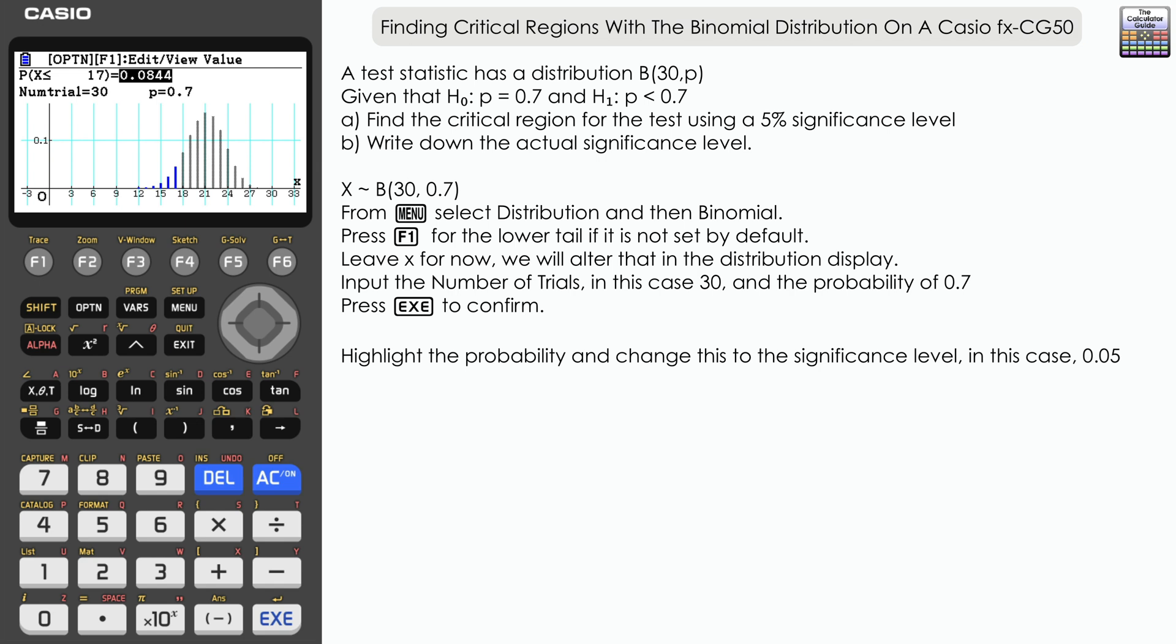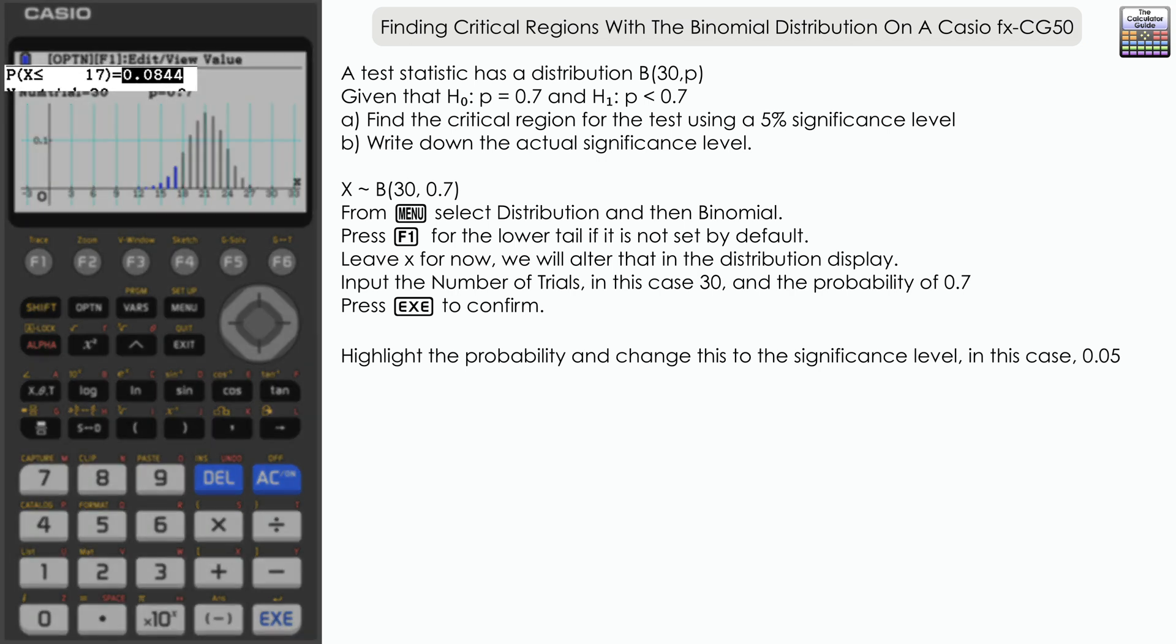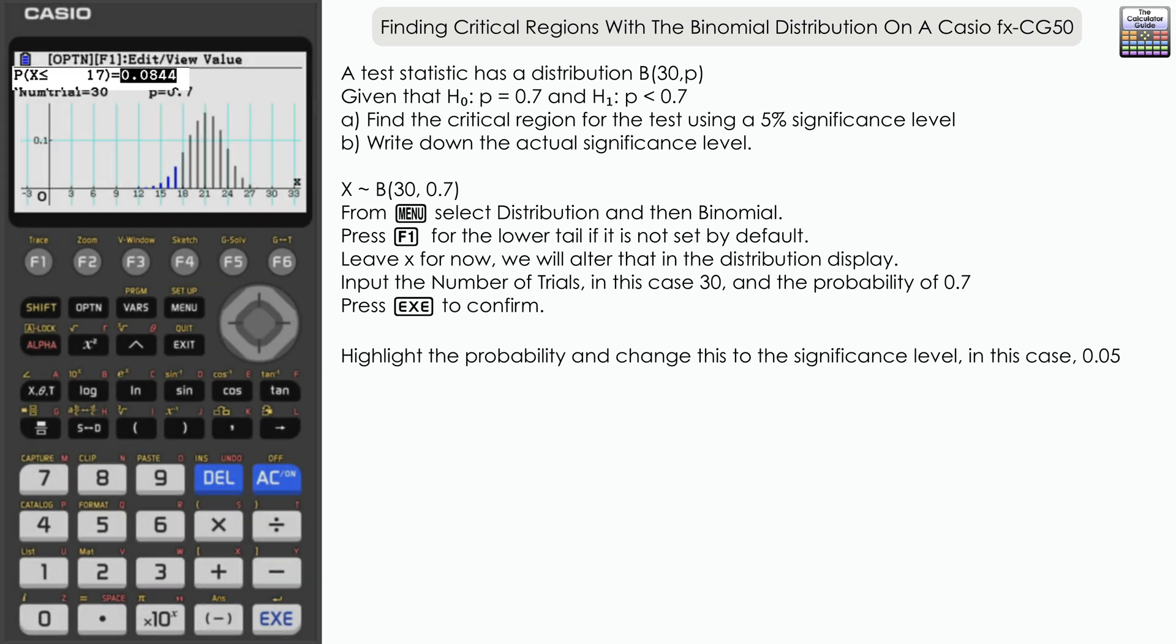Now you can see that x has changed to less than or equal to 17, and that has been displayed on the distribution there.